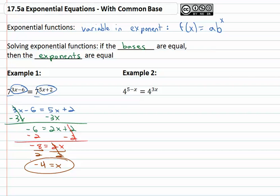How about example two? We have four to the five minus x equals four to the three x. We want to know what value for x makes the equation a true equation, what number x is representing, and fortunately both bases are the same. If the bases are the same, the exponents must also be the same, five minus x must equal three x.